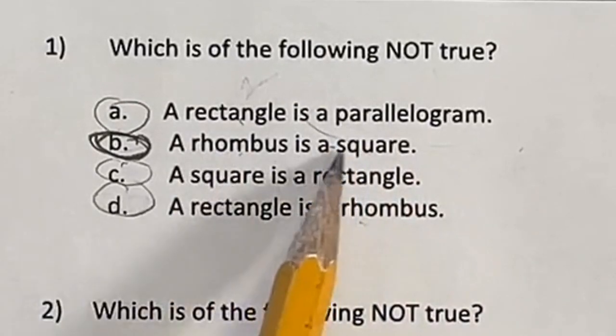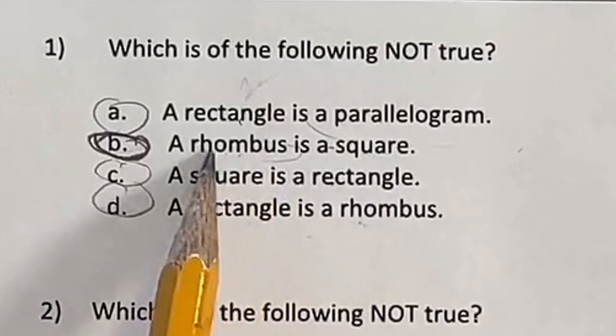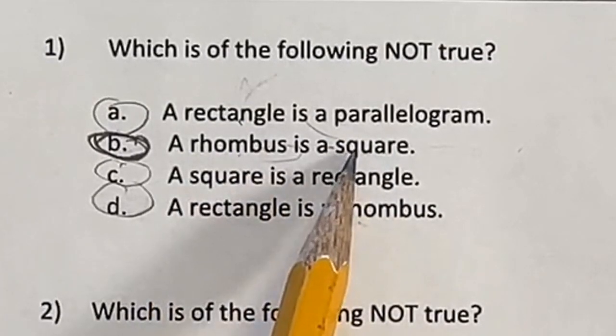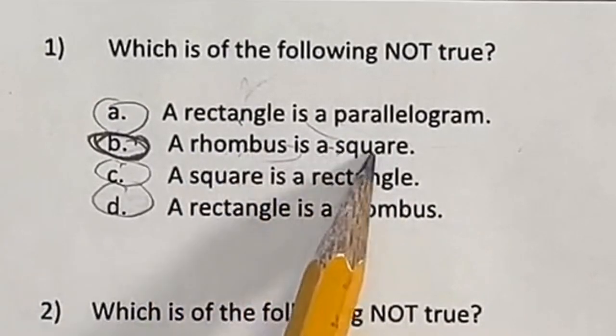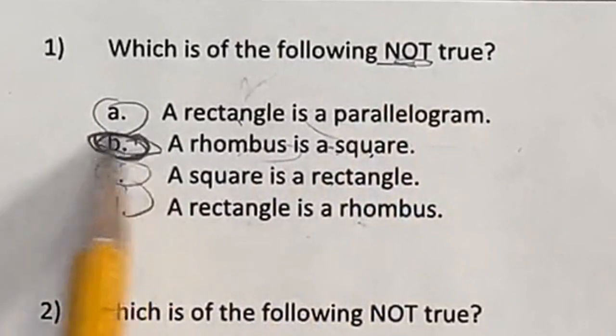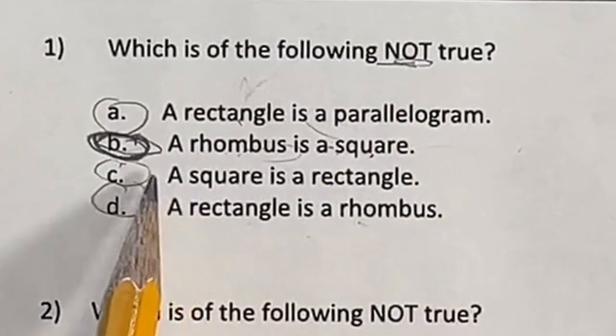This one says a rhombus is a square. Well, a rhombus has four equal sides, but it doesn't necessarily come together at 90 degree angles. So a rhombus is not always a square, meaning this is not true. That is definitely an answer here.